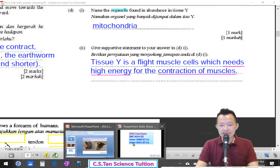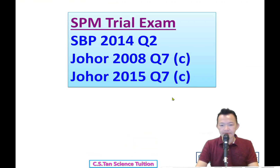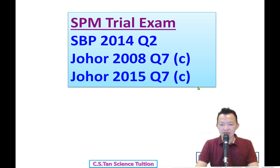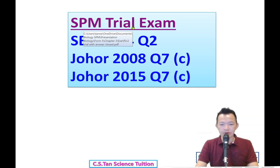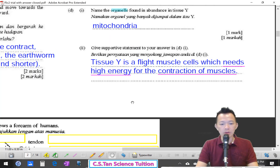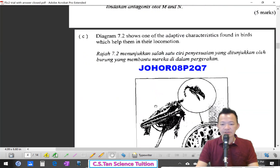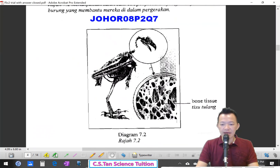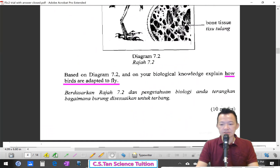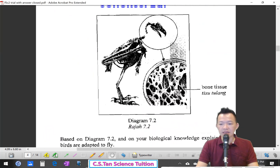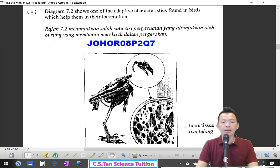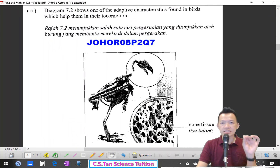Next question — 2008, question number 7, part C. There are two more essay questions here. This question is worth 10 marks. Let's continue.